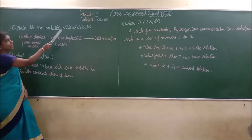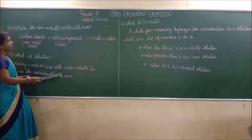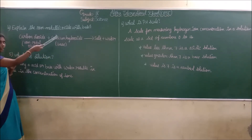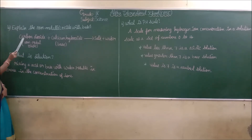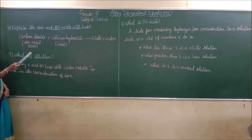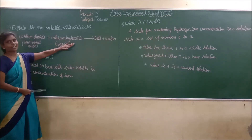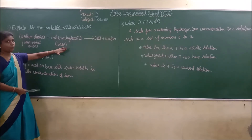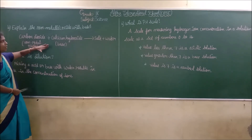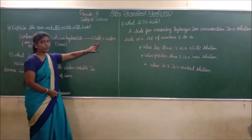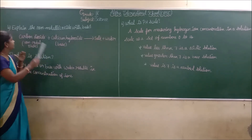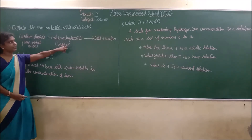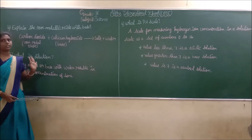Explain the reaction of non-metallic oxide with base. For example, carbon dioxide is a non-metal oxide. It is combined with calcium hydroxide, which is a base. When non-metallic oxide reacts with a base, the same product is obtained — salt and water.